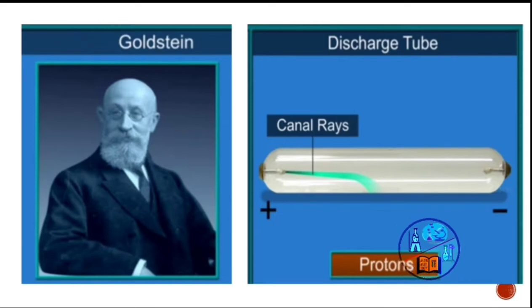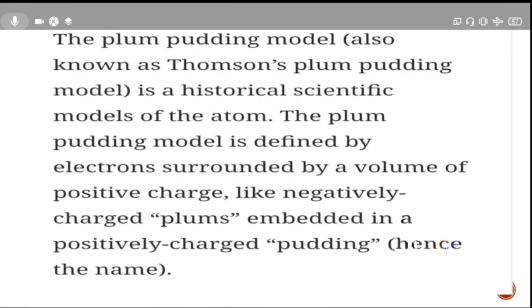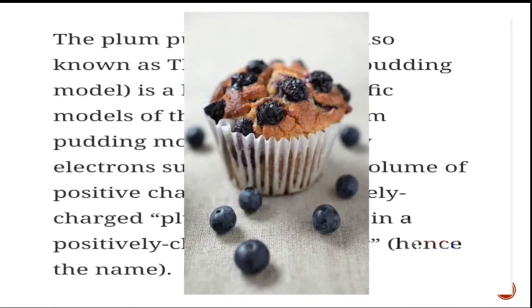They tried to understand this through various experiments as it was considered necessary to know about their arrangement. So in 1904, J.J. Thompson proposed the first atomic model, the plum pudding model. It is a historical scientific model of the atom. The plum pudding model is defined by electrons surrounded by a volume of positive charge, like negatively charged plums embedded in a positively charged pudding.